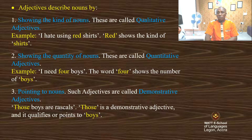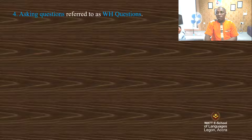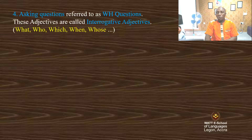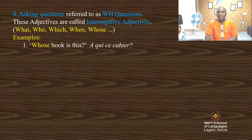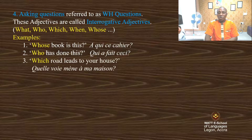Fourth, adjectives describe nouns by asking questions — referred to as WH questions. The adjectives in this category begin with WH. They are called interrogative adjectives. These are: what, which, when, whose, etc. For example: 'Whose book is this?' 'Who has done this?' 'Which road leads to your house?'